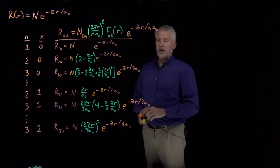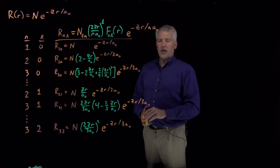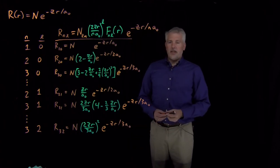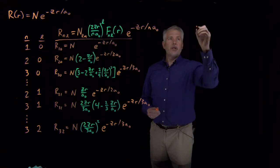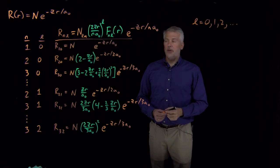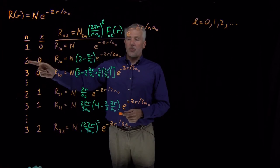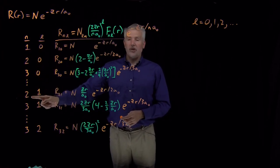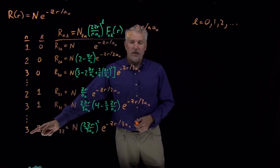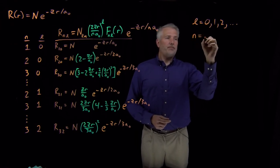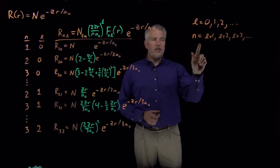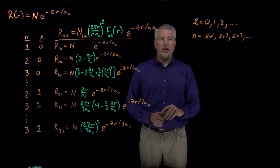This is the general form of each radial solution of the Schrödinger equation. We need to address what values of N and L solutions exist for. L is the same L from the rigid rotor Schrödinger equation, so L can be any non-negative integer: 0, 1, 2, and so on. When L equals zero, N can be 1, 2, 3, or larger. When L equals one, N must be 2 or 3 or higher. When L equals two, N can be 3 or higher. So whatever the value of L, N must be at least L plus one.